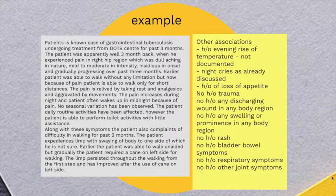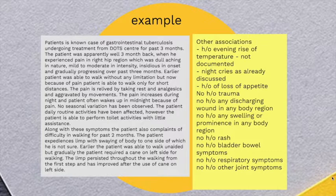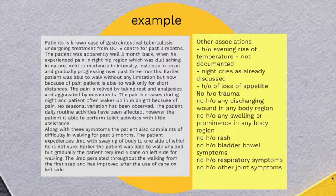Based on this history, we are guiding our diagnosis to be based on an infective etiology. Most likely the patient was having tuberculosis of the GIT, and the focus gradually transmitted to the hip joint — that is the right hip joint — and the patient may have developed infection of the right hip joint, which resulted in these symptoms.